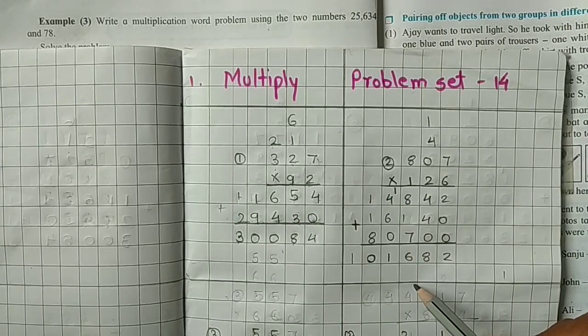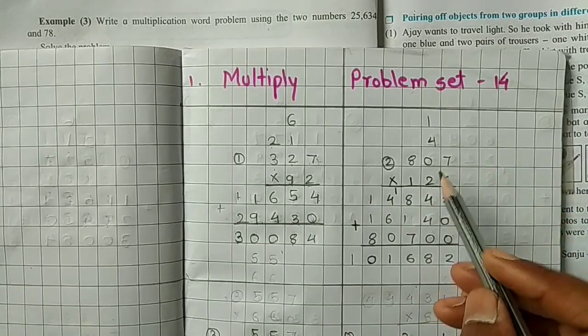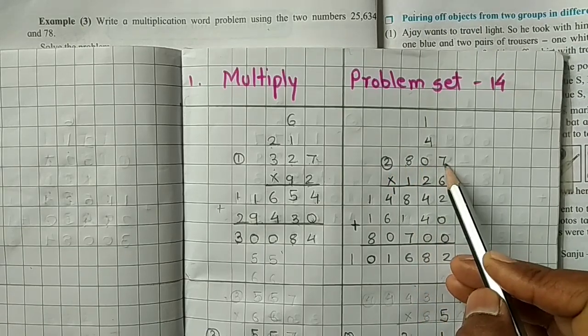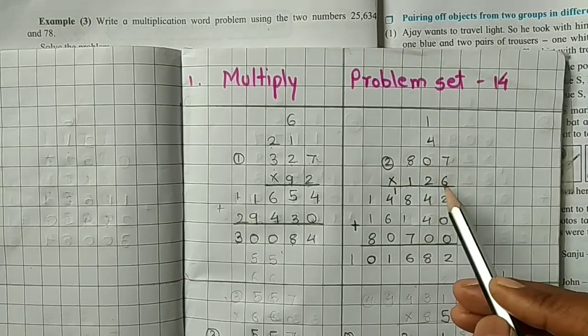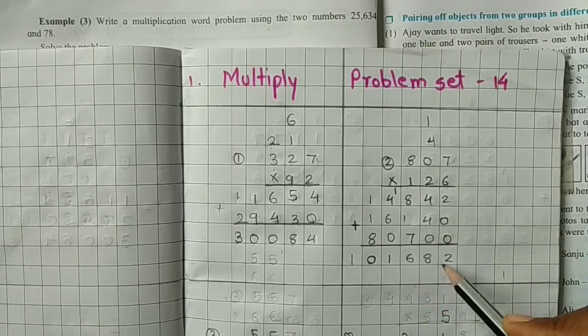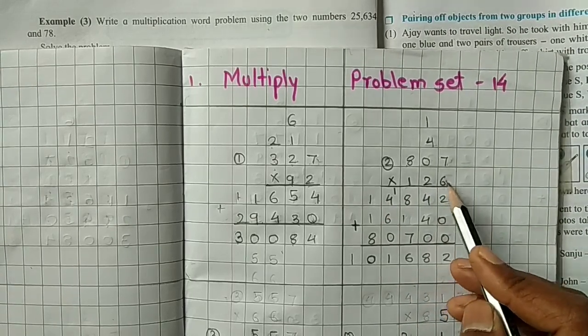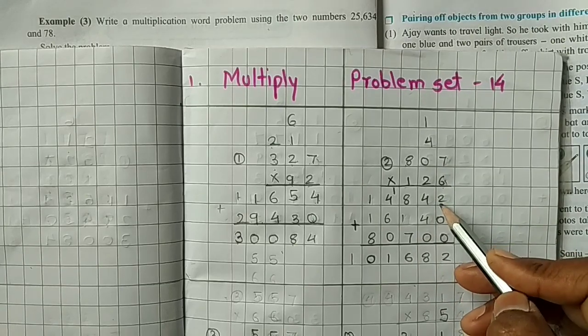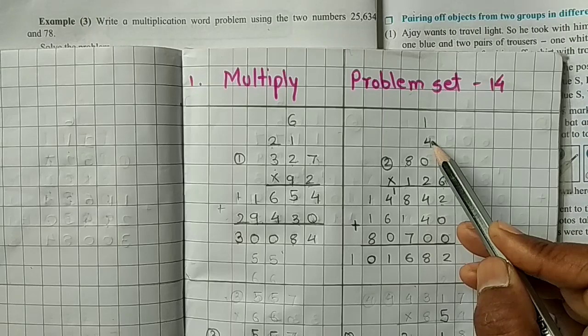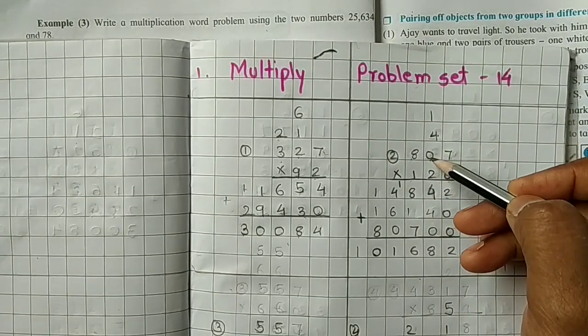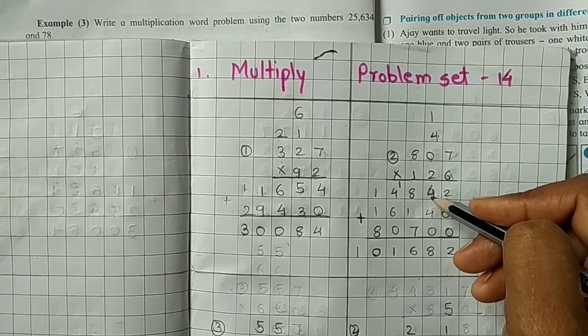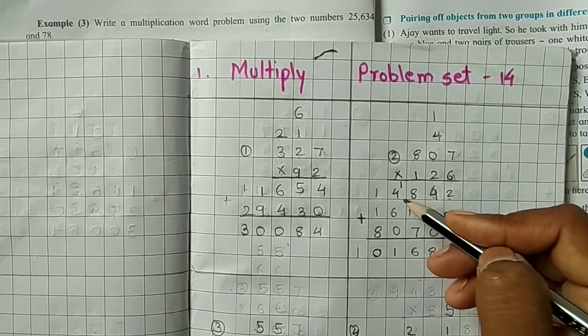Now next example is here. Given multiplication by 3 digit number. So we will multiply first. 6 times 7 is 42, so 2 write in unit place, 4 carry forward. 6 times 0 is 0, so write 0 plus 4, here 4. 6 times 8 is 48.